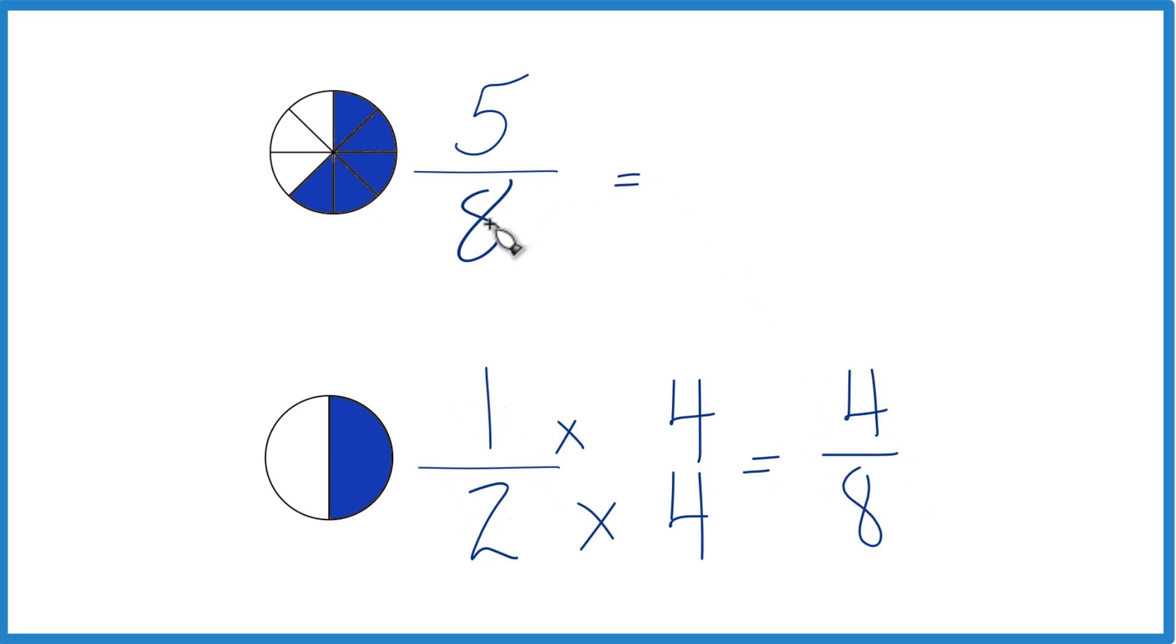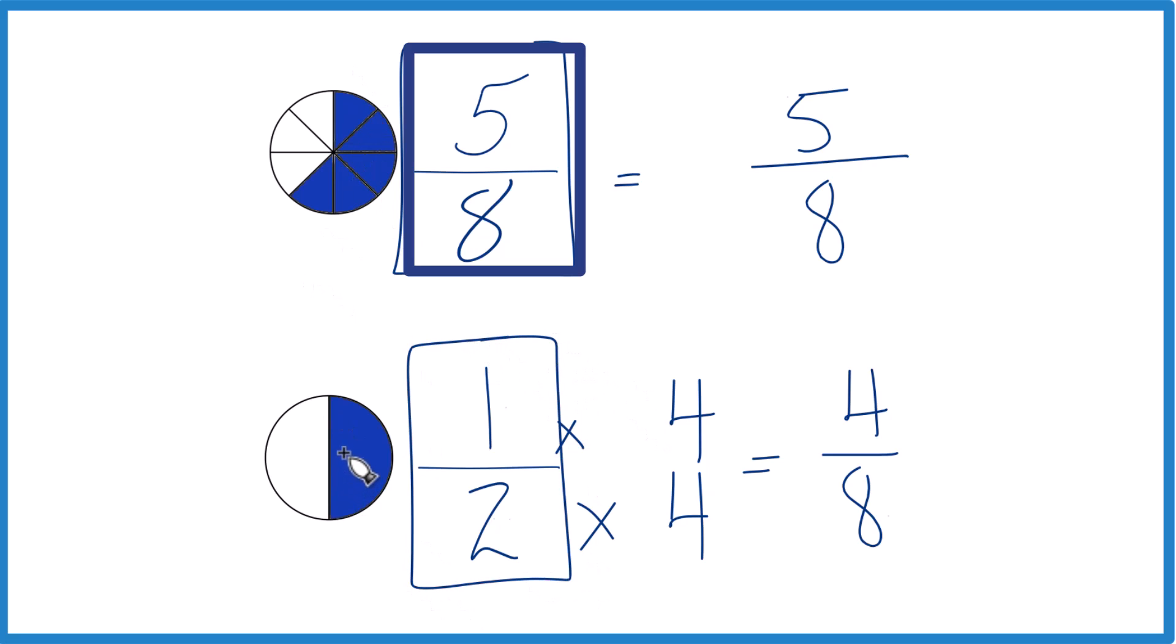Here, we don't need to do anything to keep the 8 the same, so we just call it 5 eighths here again. And now, same denominator, compare the numerators. 5 is greater than 4, so 5 eighths is greater than 4 eighths. And we can say that 5 eighths, the fraction 5 eighths, that's greater than 1 half, which is what we found before.